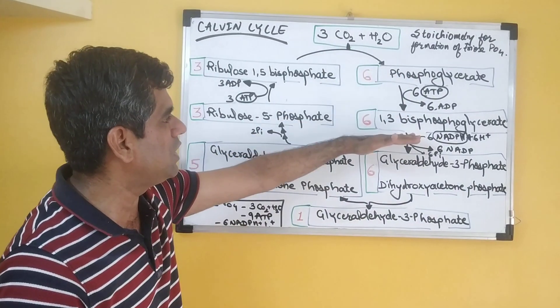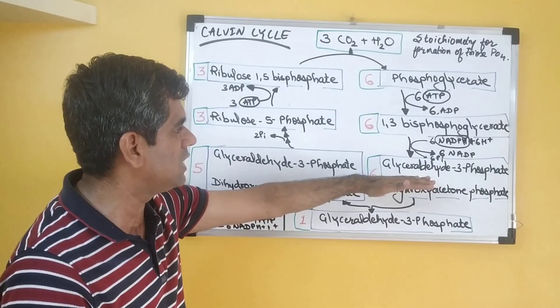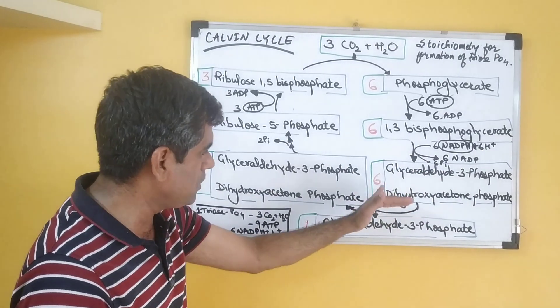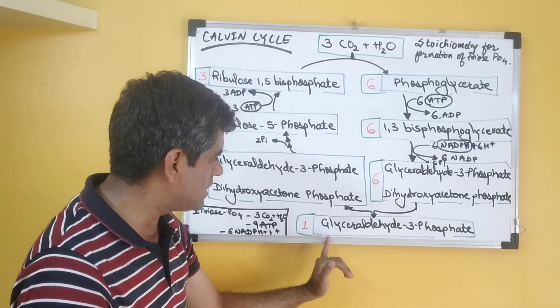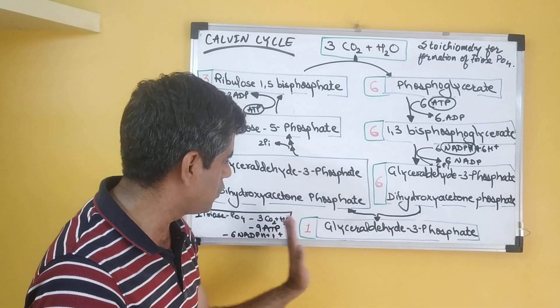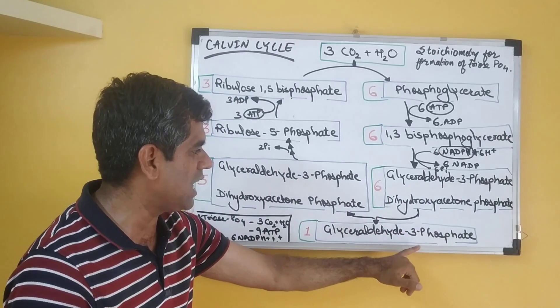So we have converted it into 1,3-bisphosphoglycerate, then into glyceraldehyde-3-phosphate or DHAP, which isomerize with each other. And from this, one molecule of glyceraldehyde-3-phosphate goes out of the cycle for synthesis. So we have formed one molecule of glyceraldehyde-3-phosphate, a 3-carbon compound.